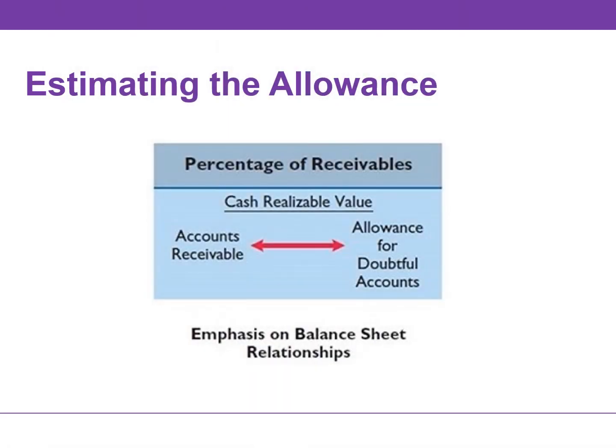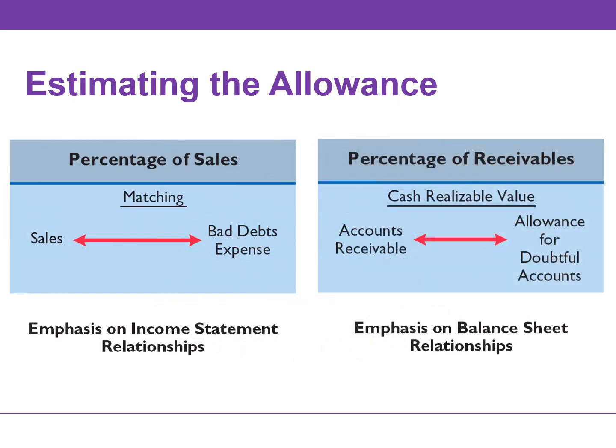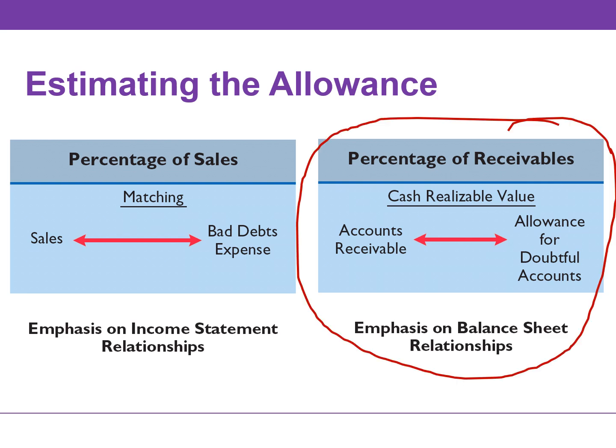This video will discuss how we estimate the allowance using the percentage of receivables method. Under the allowance method, companies must estimate the allowance to record bad debt expense. Two bases are used to determine this amount: the first is the percentage of sales and the second is percentage of receivables. Both bases are generally accepted. We will focus on the percentage of receivables.